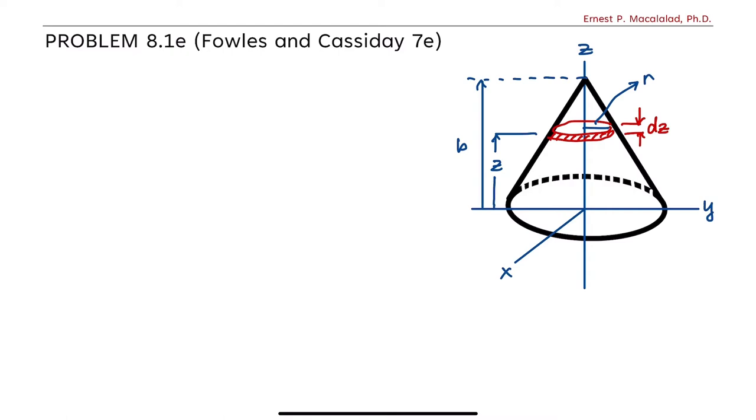So if this disk is z away from the xy-plane, this distance z is related to b from the fact that this angle, let's call that theta, is similar for this triangle and this triangle. So let's say the radius of the base is a, therefore, the ratio of r over b minus z is equal to the ratio of a over b, and this is equal to tangent theta.